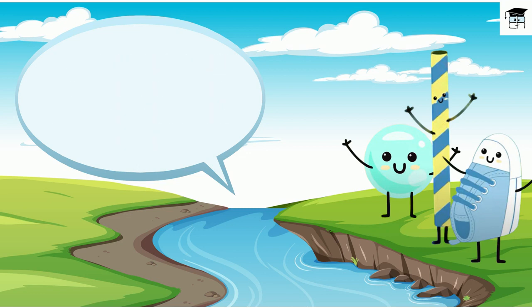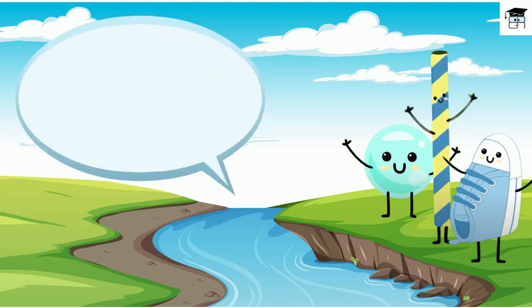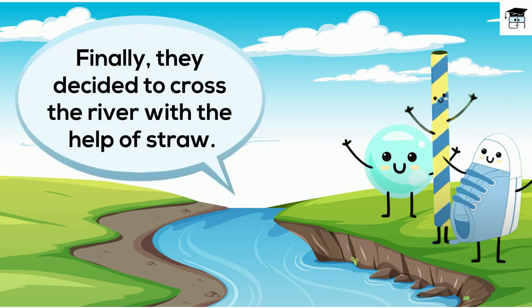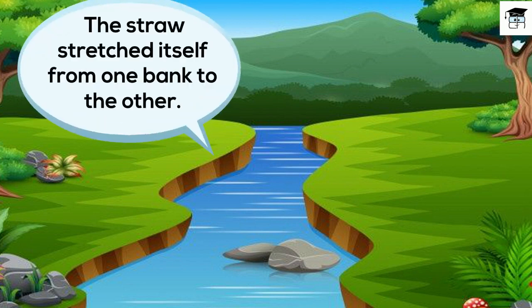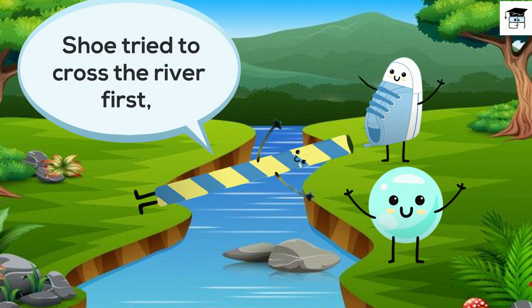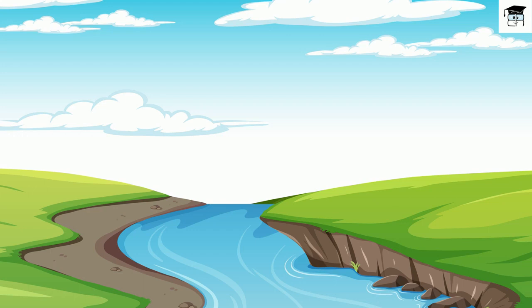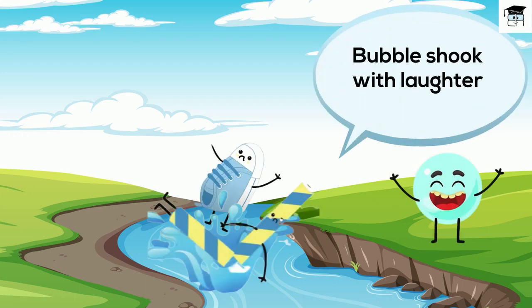At first, the shoe asked the bubble if they can cross the river by floating on the bubble. The bubble refused, but they finally decided to cross the river with the help of the straw. The straw stretched itself from one bank to the other. The shoe tried to cross first, landed on the straw and broke it. The bubble shook with laughter and burst.